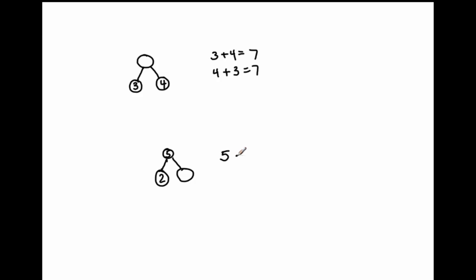We write a minus sign, and then I put the part that I know. So two. And five minus two equals some number that we're trying to find. And that number is three.